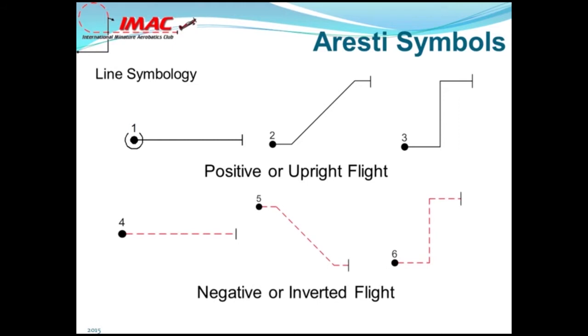Negative or inverted flight is drawn with a dashed line. When color printing is available, the dashed lines will be drawn red. With black and white printing, the negative lines will be drawn as black dashed lines. Figure four is wings-level horizontal inverted flight. Figure five begins wings-level inverted, pulls to an inverted 45 downline, and ends wings-level horizontal inverted flight. Figure six begins wings-level horizontal inverted, pushes to a vertical upline, pulls to wings-level horizontal inverted flight.